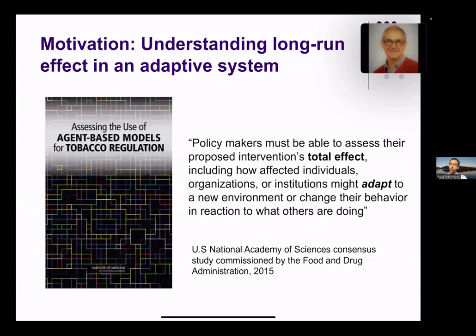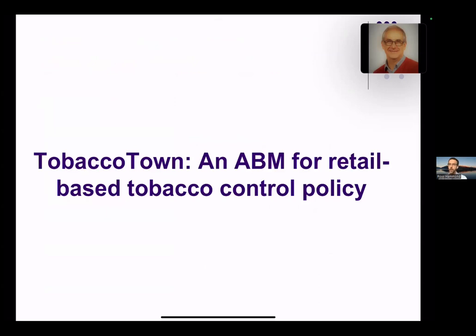A final motivation, stressed by a US National Academy of Sciences report studying agent-based models for tobacco regulation, is that in tobacco more than almost any other part of public health, we have to think about the long-run behavior of our interventions. There are well-organized strategic actors in the tobacco industry who will change what they're doing in response to any policy change, and thinking about how that plays out over five or ten years, not just the first year, is really important. Agent-based models can help us do that.